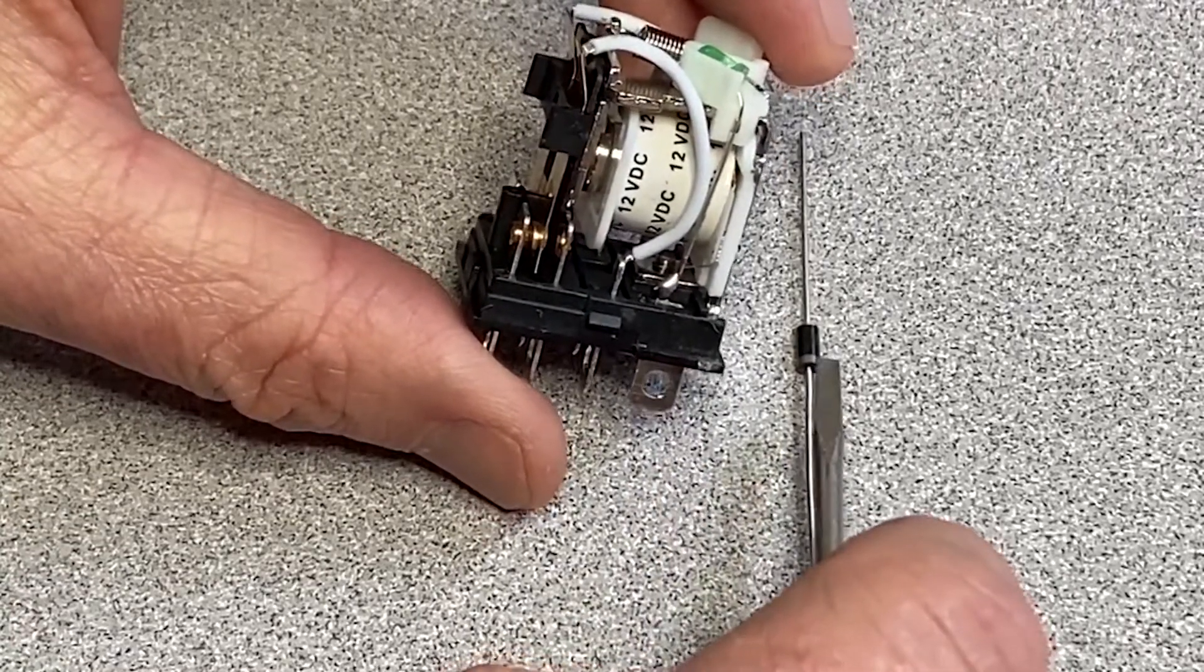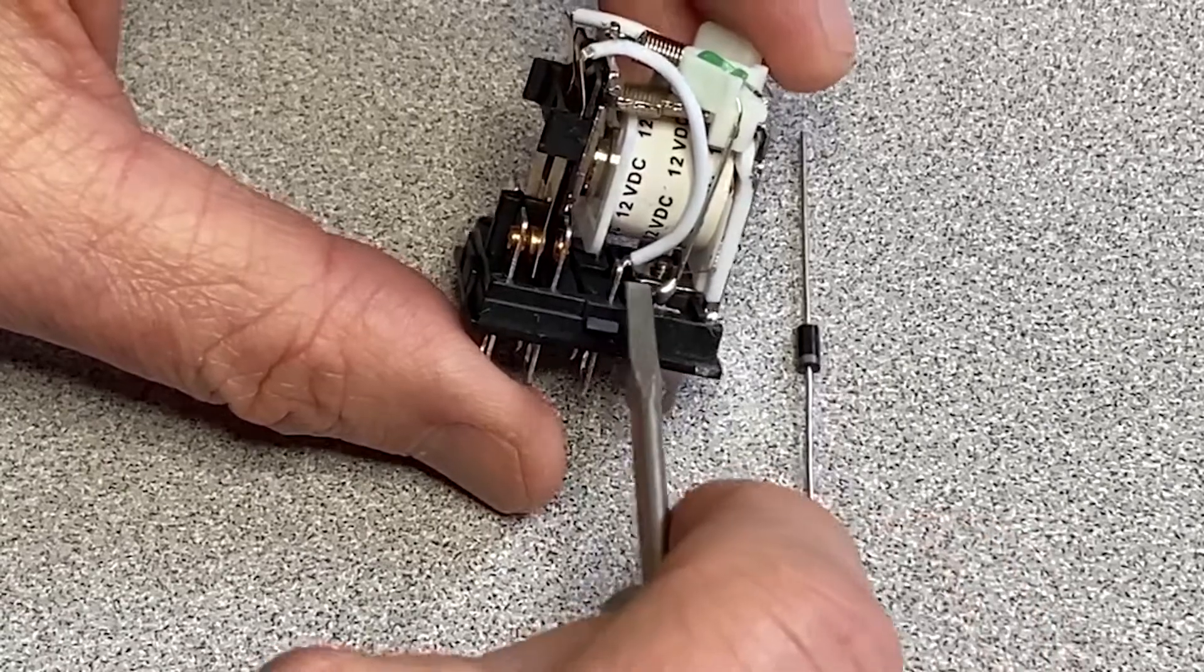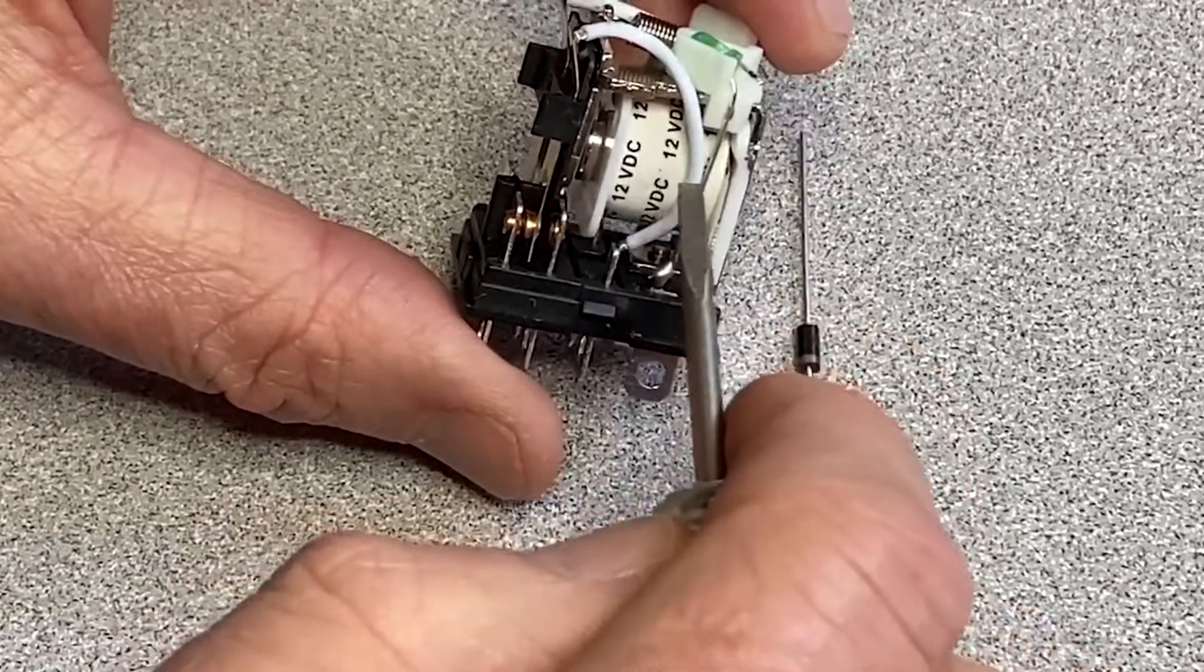In normal circumstance, the power comes in, the diode says, I'm not going to let you go through there, forces the electricity to come up here, do what it's supposed to do.